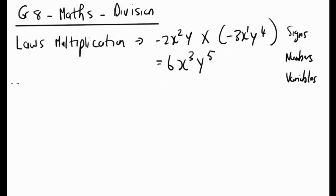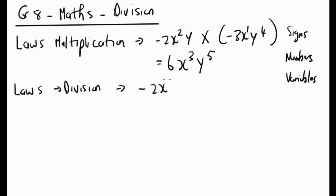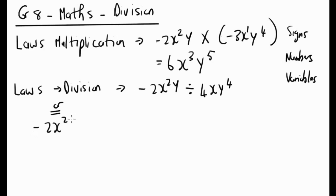For division our strategy is the same: signs, then numbers, then variables. Division is a bit trickier. For example, negative 2x squared y divided by 4xy to the power 4 — in algebraic language, divided by can be written as a traditional division sign or as a fraction. Both representations are exactly the same thing.